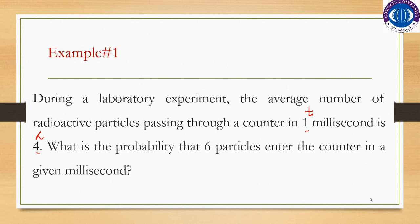During a laboratory experiment, the average number of radioactive particles passing through a counter in one millisecond is four. What is the probability that six particles enter the counter in a given millisecond? The radioactive particles are passing through a counter in t milliseconds, where t equals one, so the time span is fixed and we have the average number of radioactive particles.